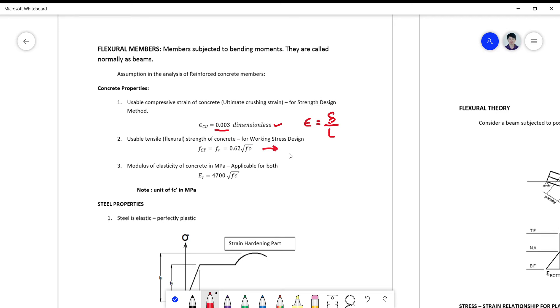This is now also called the modulus of rupture. For the modulus of elasticity of concrete in megapascals, which is applicable to both strength design and working stress design, your modulus of elasticity is equivalent to 4700 times the square root of fc prime.